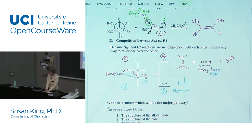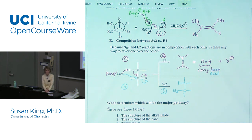It's much easier for the nucleophile to reach the beta hydrogen on the periphery of the molecule — much easier than it is to do backside attack, especially when we have a very hindered carbon bonded to the leaving group. So it's all about steric hindrance in the alkyl halide. It's also about the strength of the base slash nucleophile. The more basic the nucleophile, the more favored E2 will be over SN2.